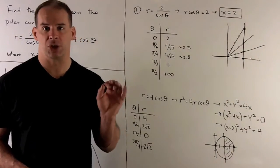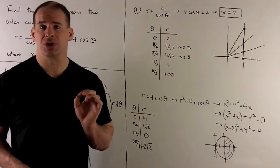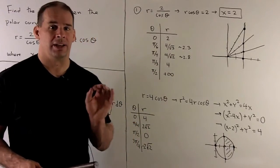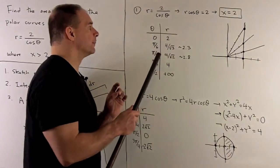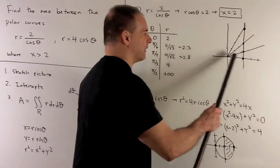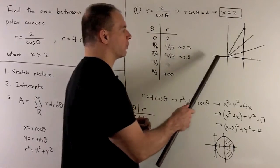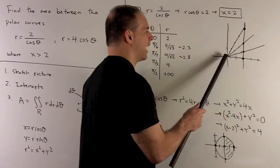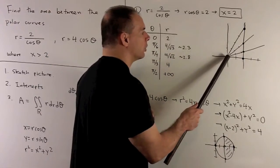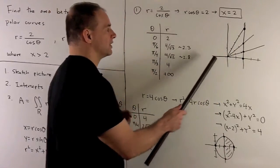Step one, we sketch our picture. For our first curve, r equals 2 over cosine theta — push the cosine to the other side, and r cosine theta equals x, so we get x equals 2. This is a vertical line going through 2. Checking a few points: at theta equals 0, r equals 2; at pi/6, roughly 2.3; at pi/4, about 2.8; at pi/3, r equals 4. In each case we stay on the line.